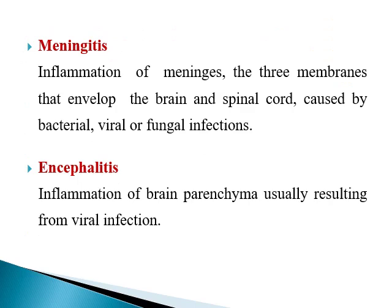CNS infections could be in two forms. The first form is called meningitis, which is inflammation of the meninges or the membranes that envelop the brain and the spinal cord. The second form is called encephalitis, which is inflammation of the brain parenchyma itself.